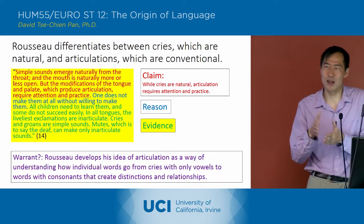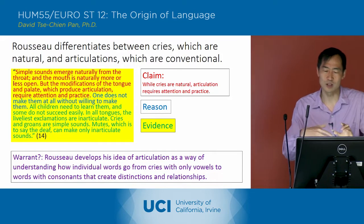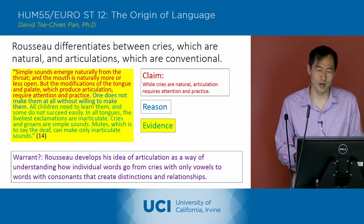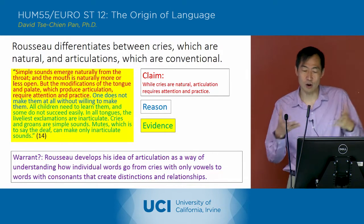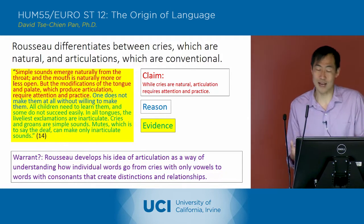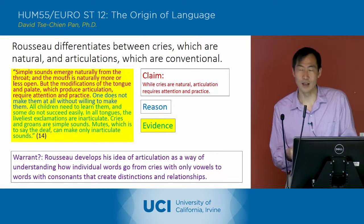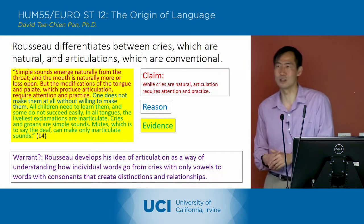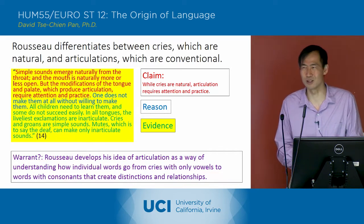It interrupts that flow of sound. And that's what he's looking at when he looks at this movement from cries to articulation. The claim he makes is that cries are natural, and articulation is not natural because it requires attention in practice. He points to the evidence: he says all children need to learn these articulations, and some do not succeed easily.